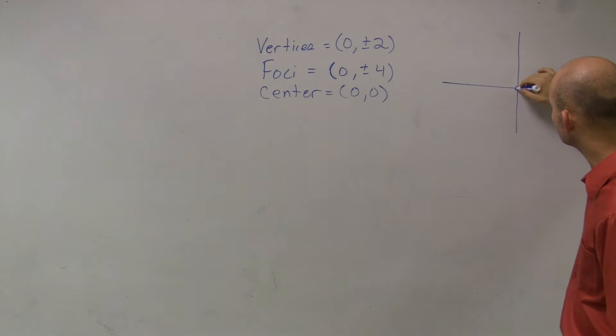So we know this point is at (0,0). My foci are at (0, ±4): 1, 2, 3, 4.